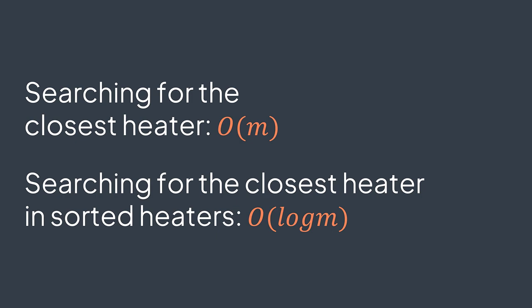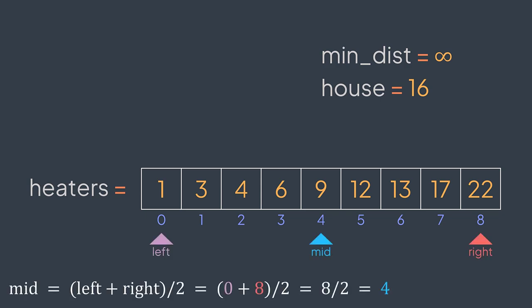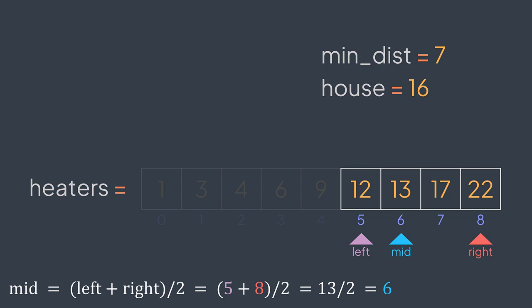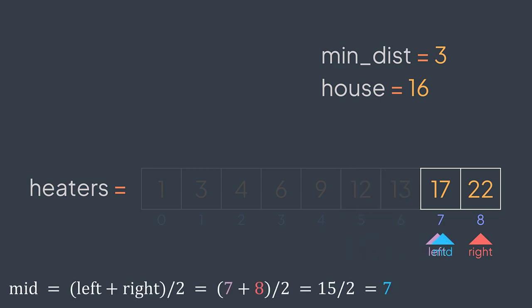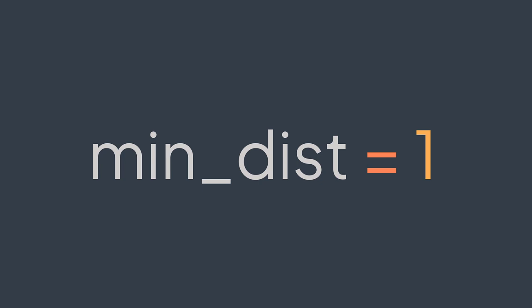For example, with this sorted array of heaters, we want to find the closest heater to house 16. mid is left plus right divided by two — we get the heater at position nine; distance between nine and 16 is seven, a new smaller distance. Because heater at mid is smaller than house, we drop the left part and focus on the right. mid becomes (5+8)/2 = 6, heater at position 13; distance is three, a new smaller distance. Heater at mid is smaller than house, we go right. mid = (7+8)/2 = 7, heater at position 17; distance is one, a new smaller distance. Heater at mid is greater than house, we go left. Now left exceeds right, we finish — the smallest distance is one.